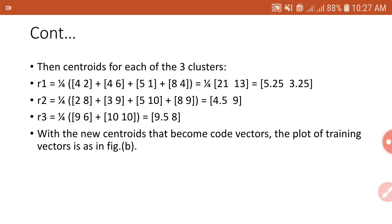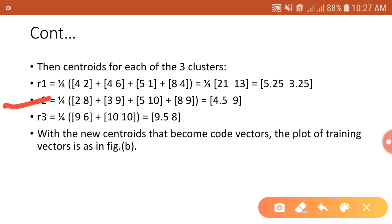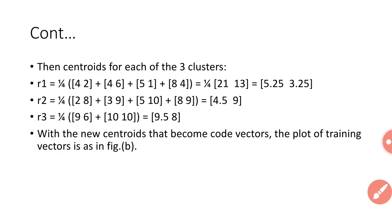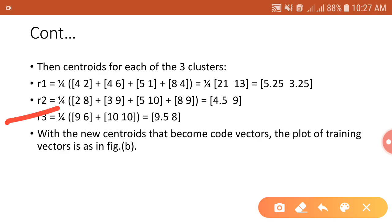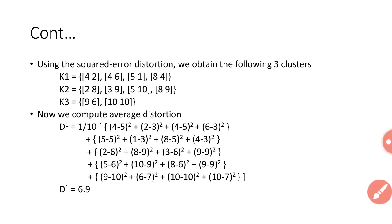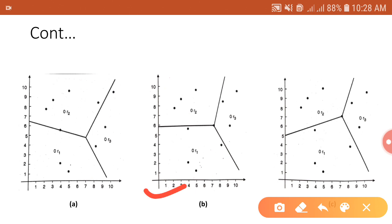In cluster K2, there are 4 vectors: (2,8), (3,9), (5,10), and (8,9). Taking the mean gives new code vector R2 = (4.5, 9). For cluster K3, there are 2 vectors: (9,6) and (10,10). Taking their mean gives new code vector R3 = (9.5, 8). Plotting these training vectors and new code vectors gives the graph in Figure B.